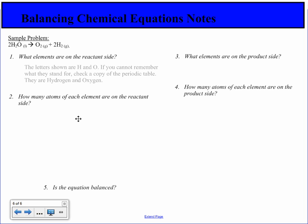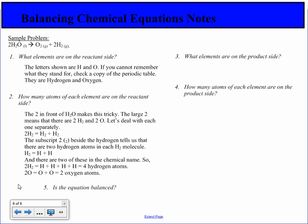We have our sample problem. What elements are on the reactant side? We have hydrogen and oxygen. How many atoms of each element are on the reactant side? The 2 in front of the H2O makes this tricky. The large 2 means that there are two H2s and two Os. Let's deal with each separately.